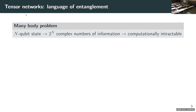A little bit about tensor networks. For those of you who don't know, tensor networks situate themselves in the following problem. You have some state of many, many qubits — that's exponentially many complex numbers of information, a completely computationally intractable open space. If I give you a Hamiltonian on 40 qubits and ask you to find the ground state, it's a very, very difficult problem a priori.